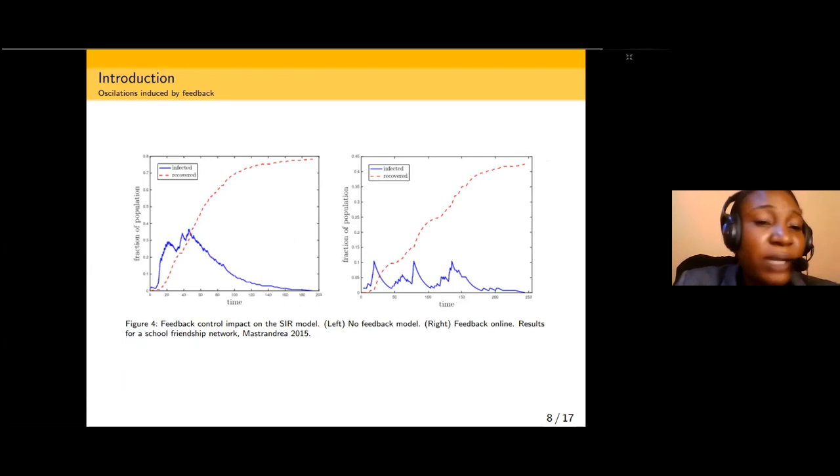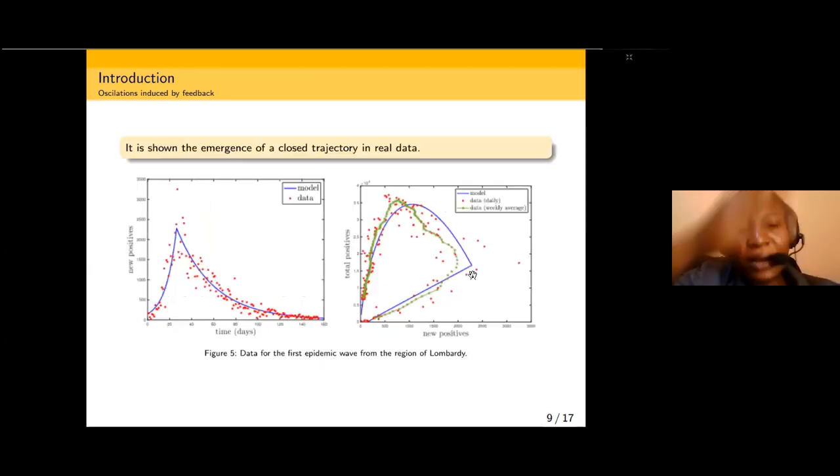In Figure 4, feedback control impact on an SIR model: on the left you can see there's no feedback model, so there's no control but there's no oscillation. On the right side, we have three oscillations on the plots. These are oscillations showing there's a closed path or trajectory. When you have a trajectory, this shows there's a limit cycle.